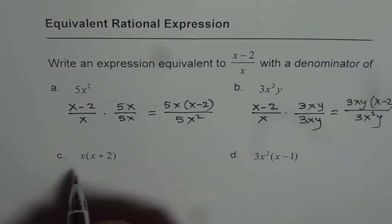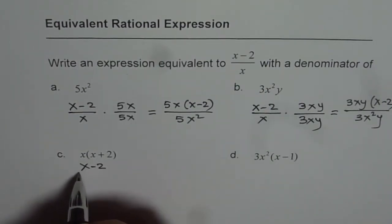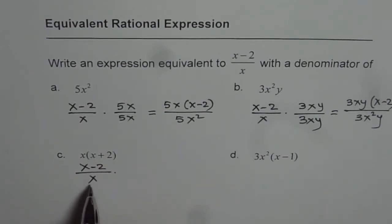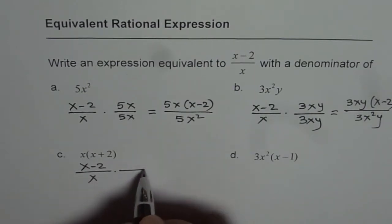Let's do the next one. Here again, x minus 2 over x. We already have x in the denominator. We also need x plus 2, so we'll multiply and divide by x plus 2.